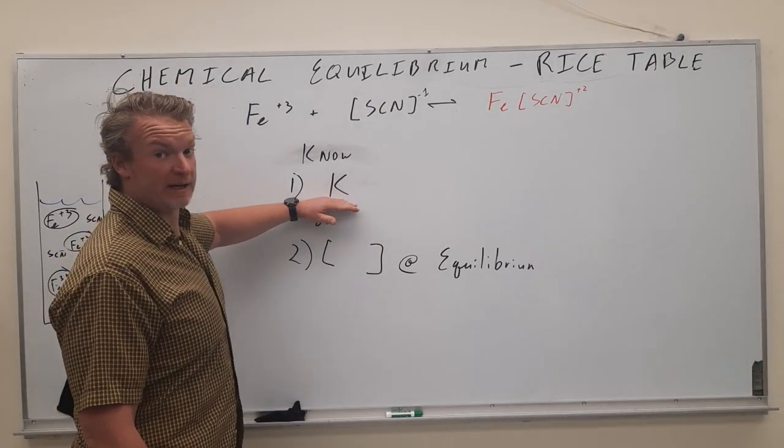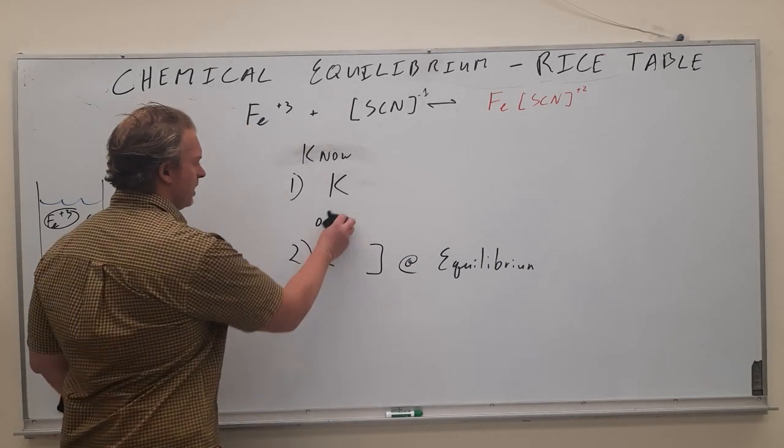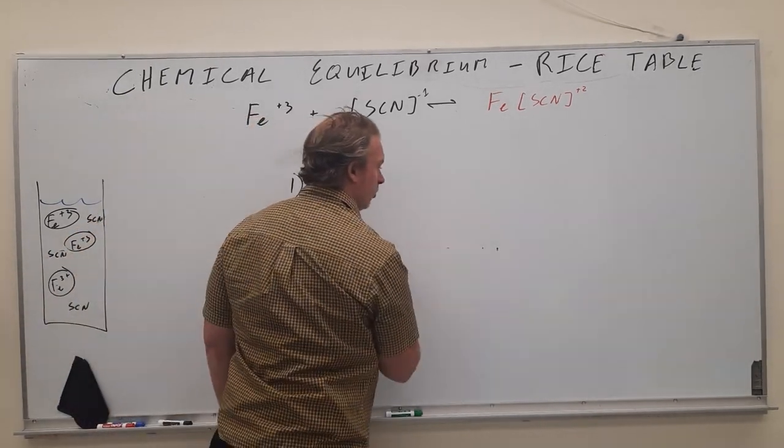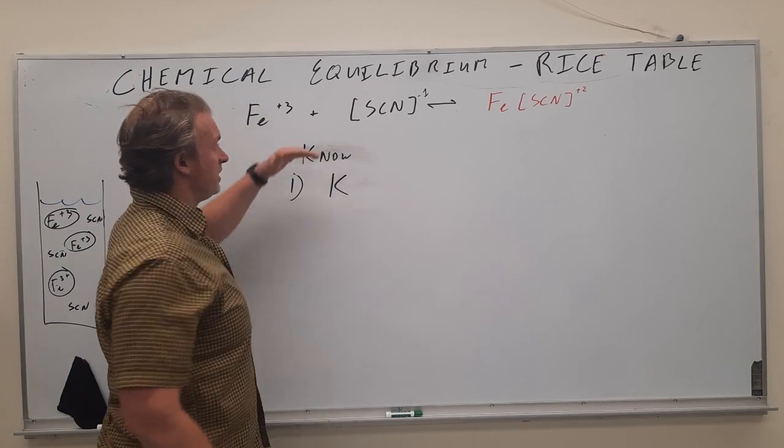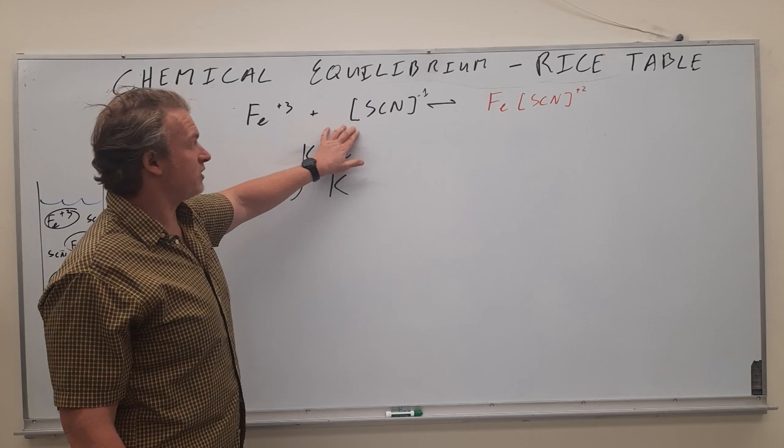We're going to be using a RICE table to calculate capital K right now. Now with this example right here, I'm going to walk through using what we have done in one of our labs. In this spectroscopy lab, this is the balanced chemical reaction.